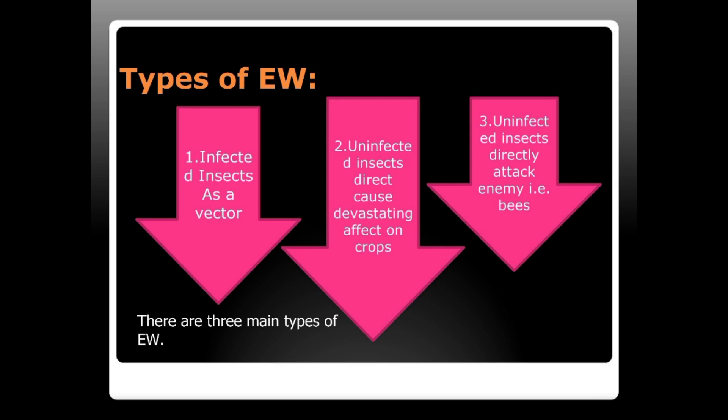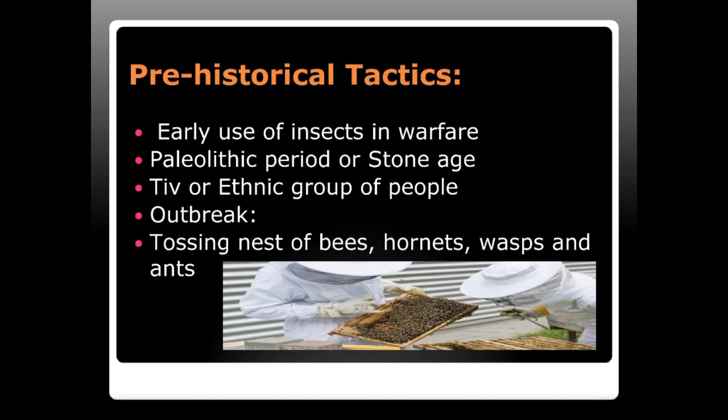In pre-historical tactics, the use of insects in warfare was common because technology was not advanced. During the Paleolithic period or Stone Age, some ethnic groups in Nigeria used these tactics — they tossed nests of bees, hornets, wasps, and ants at enemy combatants to disrupt their formation.